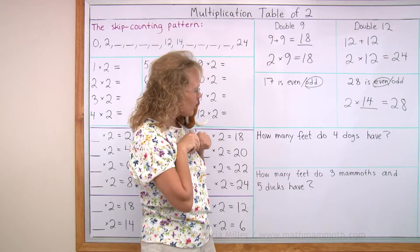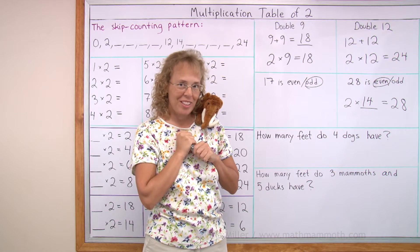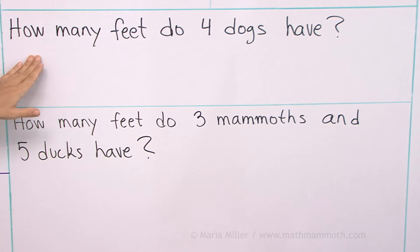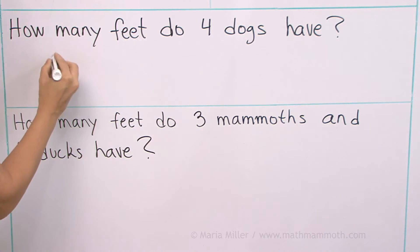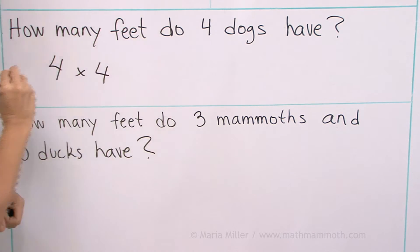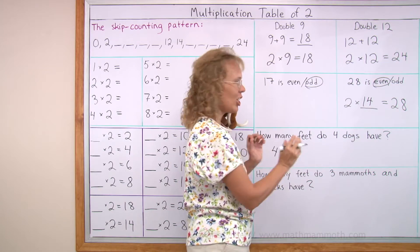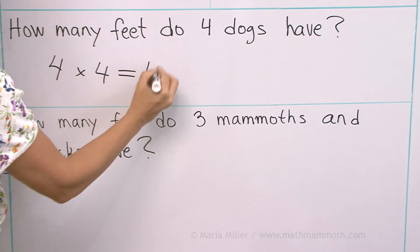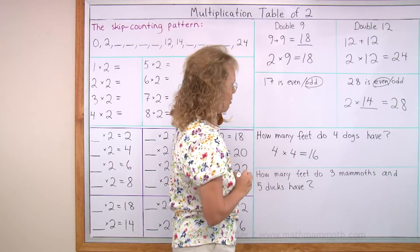And lastly, we get to do some word problems with feet. How many feet do four dogs have? Write a multiplication. That's easy. Four dogs times four feet per dog, right? Each dog has four feet. So that should be 16. So that was the easy problem.